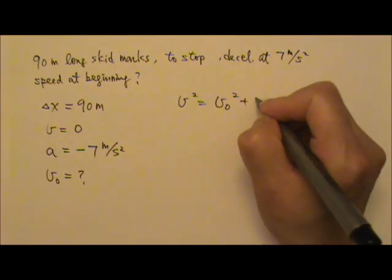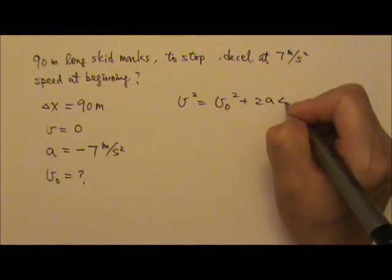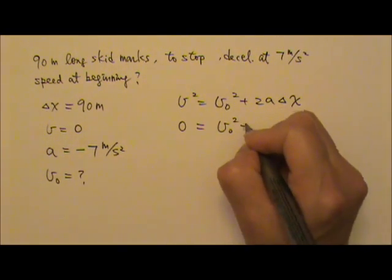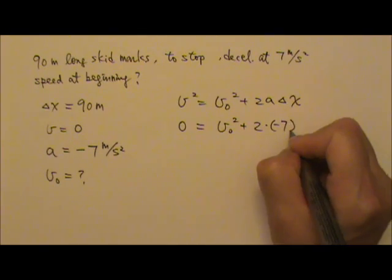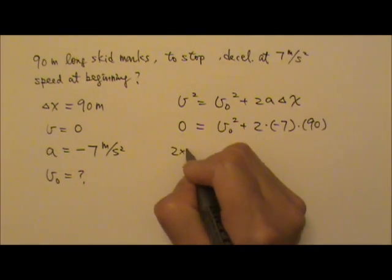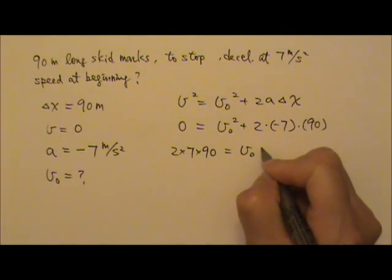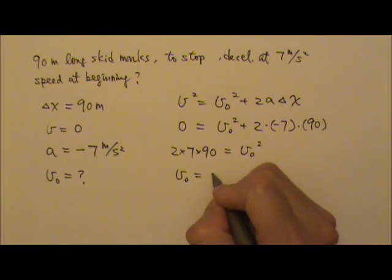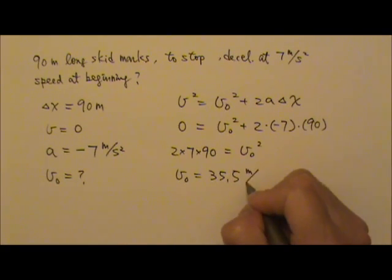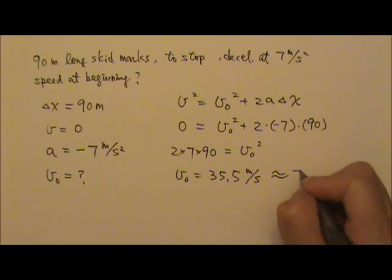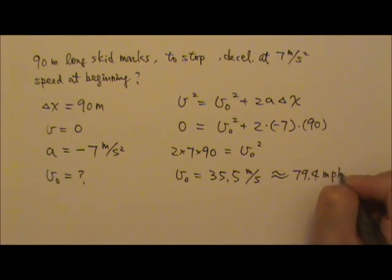So that is v squared equals to v₀ squared plus 2a times the displacement. The final velocity is 0. The initial velocity we don't know, 2 times the negative 7 times 90. If I move this to the other side, I'm going to get 2 times 7 times 90 equals to v₀ squared. So I just take square root on both sides, I'll get v₀, that is about 35.5 meters per second. And if you convert this to miles per hour, you'll find it is about 79.4 miles per hour.